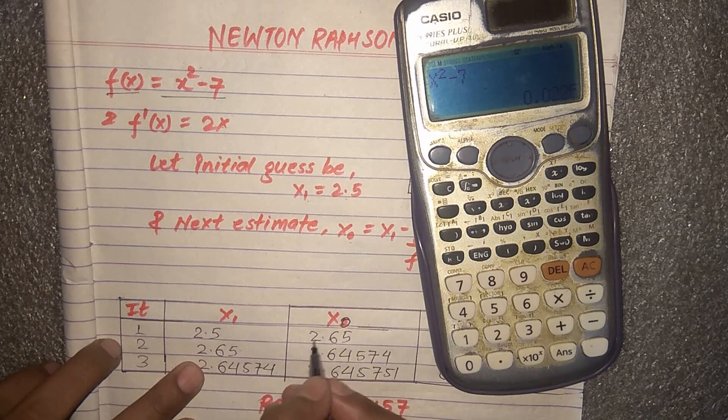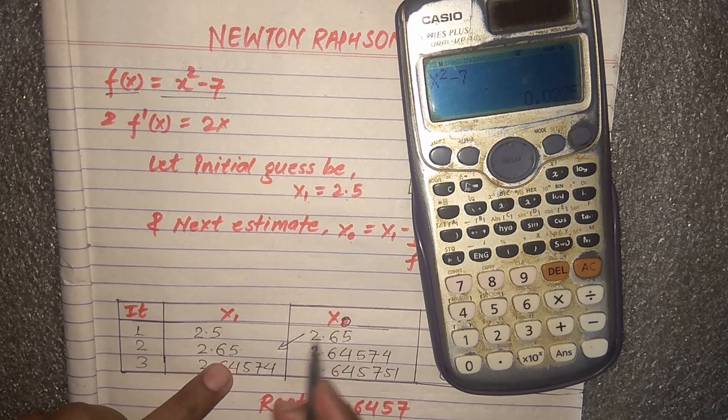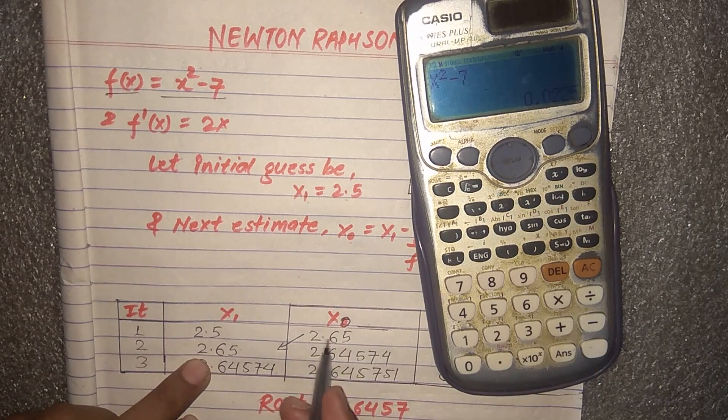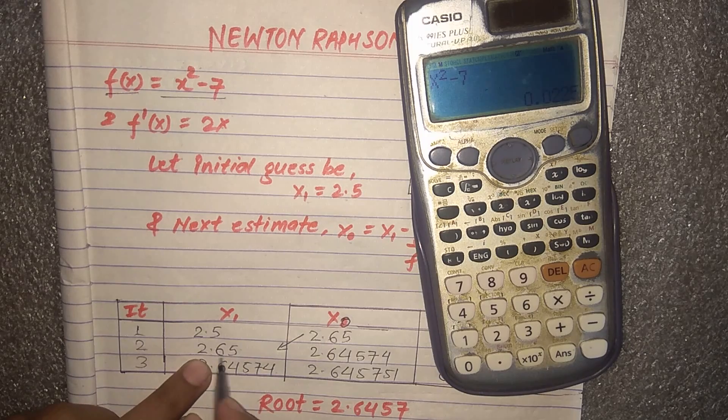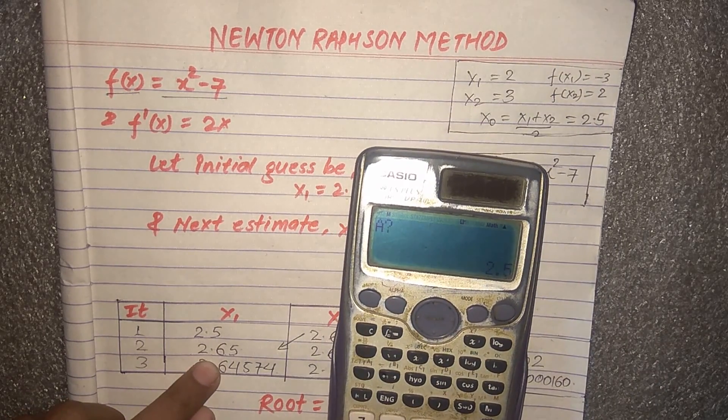In the second iteration, the x₂ value is replaced, so 2.65 comes here. Again we'll put 2.65 in place of a.